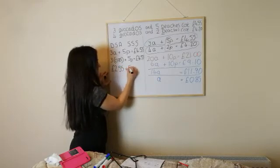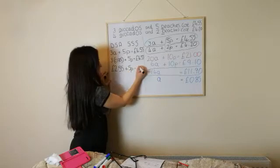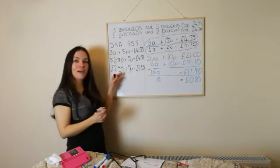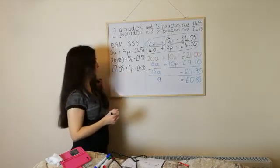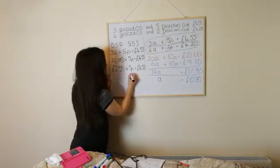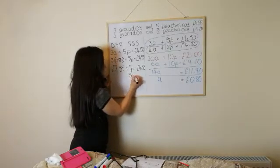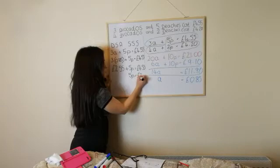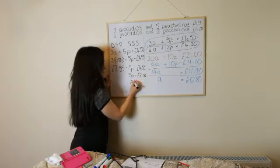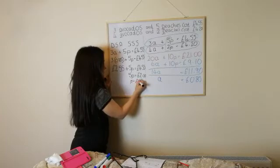Three times 85p is £2.55. Add 5P is £4.55. So, £2.55 add 5P is £4.55. So, I'm going to take away the £2.55 from each side. So, 5P is £2.00. And just to get 1P is £0.40.